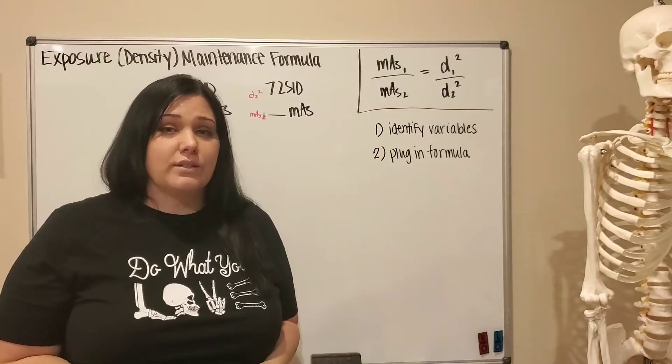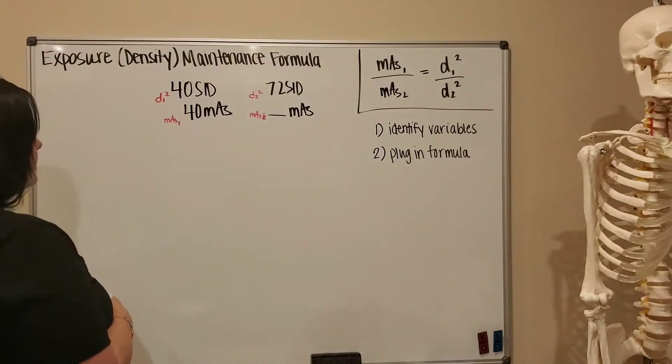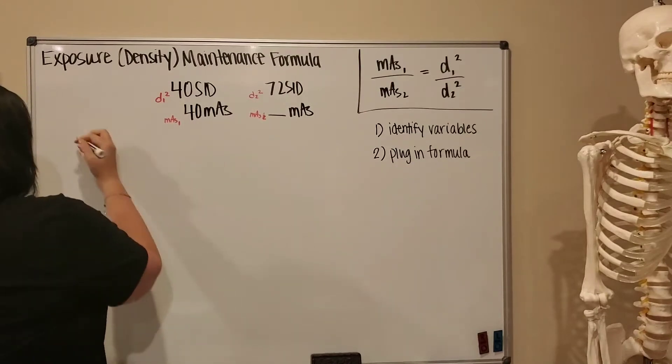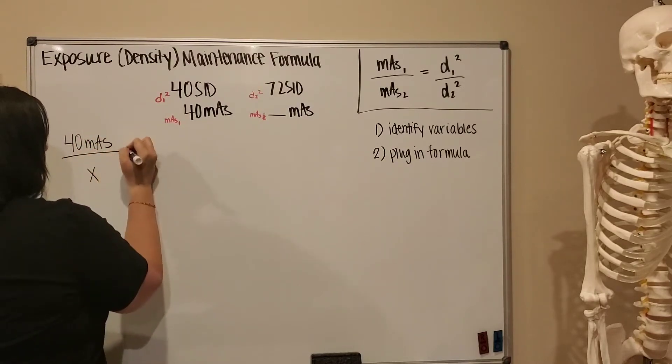So if I was setting this up now, my mAs 1, so 40 mAs, over mAs 2, which is my unknown, is equal to distance 1, which is 40 squared, over distance 2, 72 inches squared.